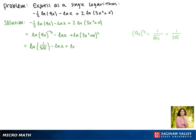Simplifying this natural log by foiling out this binomial gives us 9x to the fourth plus 6x cubed plus x squared.